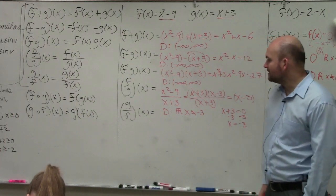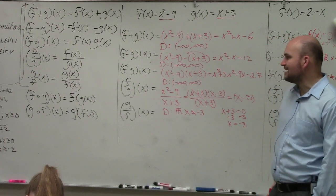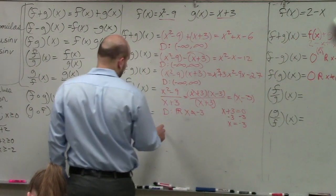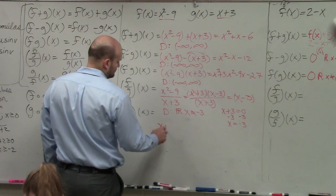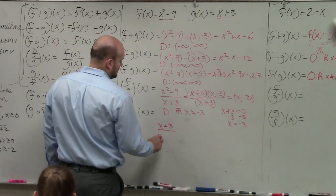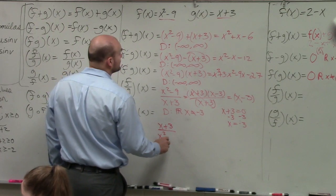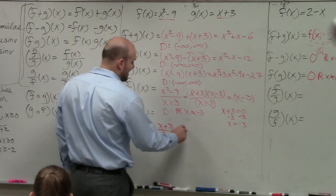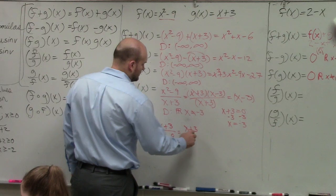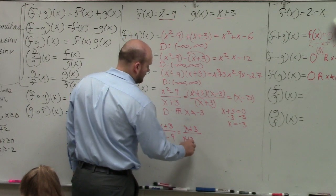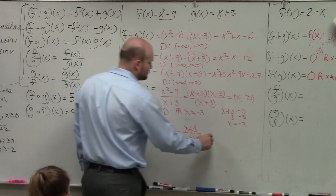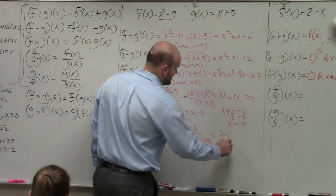And then the last one is to do g of x over f of x. So now I do x plus 3 over x squared minus 9. Again, you can do the same thing. Factor it. Those divide out. So I'm left with 1 over x minus 3.